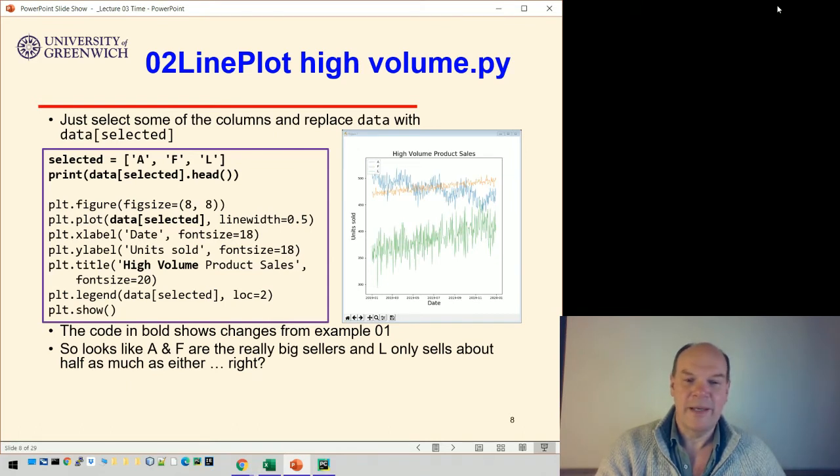Well, it looks from that figure that the A and F are the really big sellers. Those are the blue and the orange ones. You can't quite see that on my slide, but you can see the green one is much lower than the others, and L only sells about half as much as the others. You'd say from that, wouldn't you?